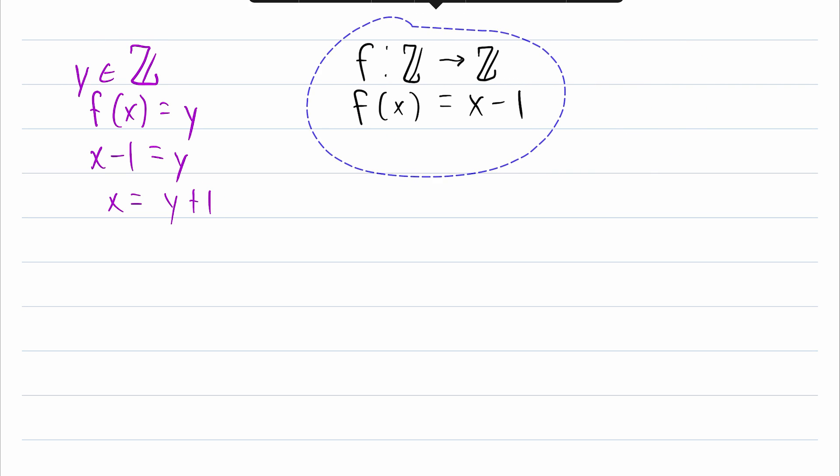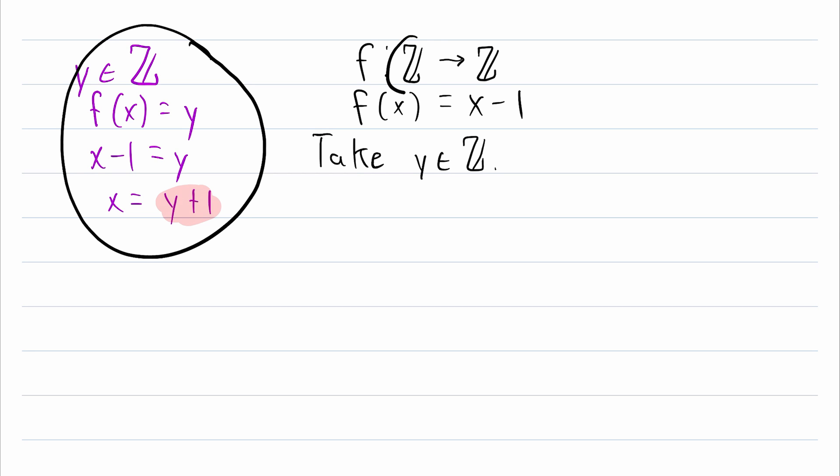So for the proof, this is how it goes. Take an arbitrary element y from the codomain. Then we need to show that the expression we solved for over here is in the domain. In this case, that's very simple. We say then y plus 1 is an element of the integers by closure.